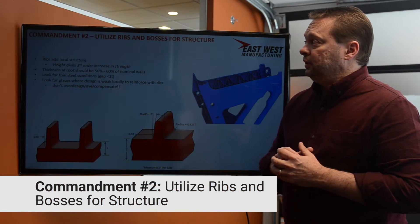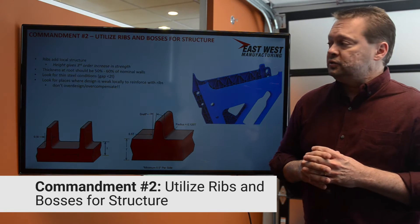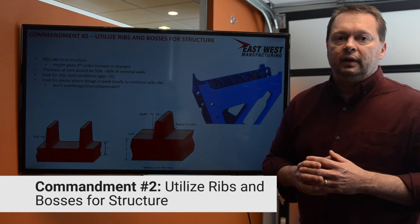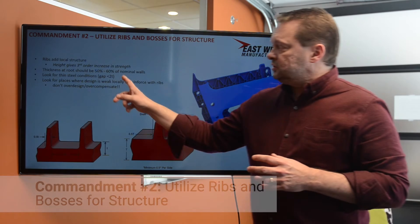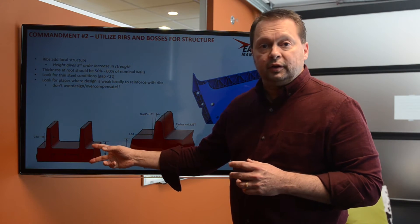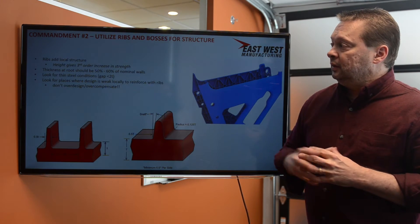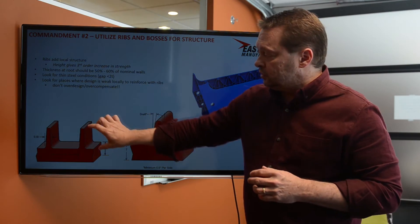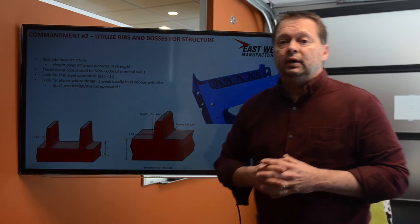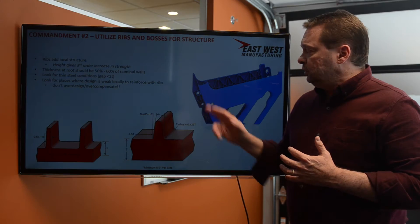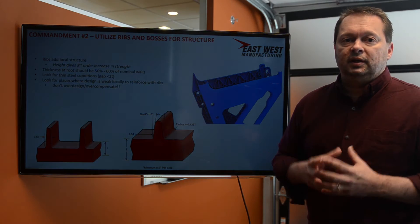The second commandment for injection molding is to utilize ribs and bosses for structure. Ribs and bosses are surfaces that extend off of the nominal wall to reinforce the part structurally in that area. You want your rib wall thickness to be roughly 50 to 60% of your nominal wall. Ribs can give you strength in a third order — the taller the rib, the more strength relative to its height. It's a great way to add strength and structural rigidity without thickening the nominal wall, which would cause additional cooling time and cost.